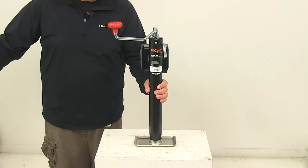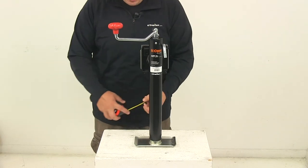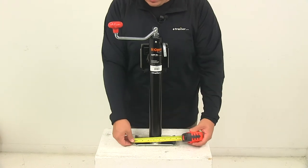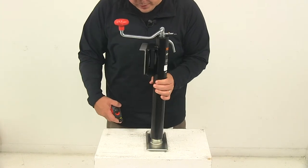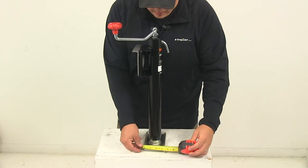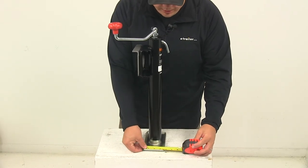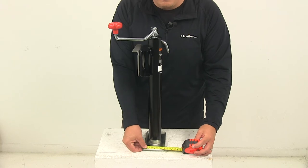That foot plate, taking a measurement of that, going edge to edge this direction, measures about seven and a half inches. And then going in this direction, it's going to give us a measurement of about three and three-quarters of an inch to three and seven-eighths of an inch.